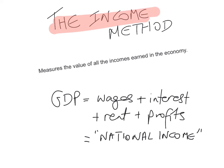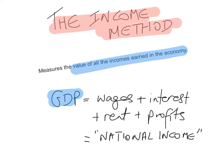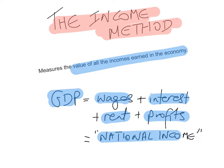The income method focuses on the income flow and measures the value of all incomes earned in the economy. GDP is the sum of wages earned by labor, interest earned by capital, rent earned by land, and profit earned by enterprise. This gives us national income. The output method gives us national output, and in the end, national output and national income should be equal because they measure the same thing.